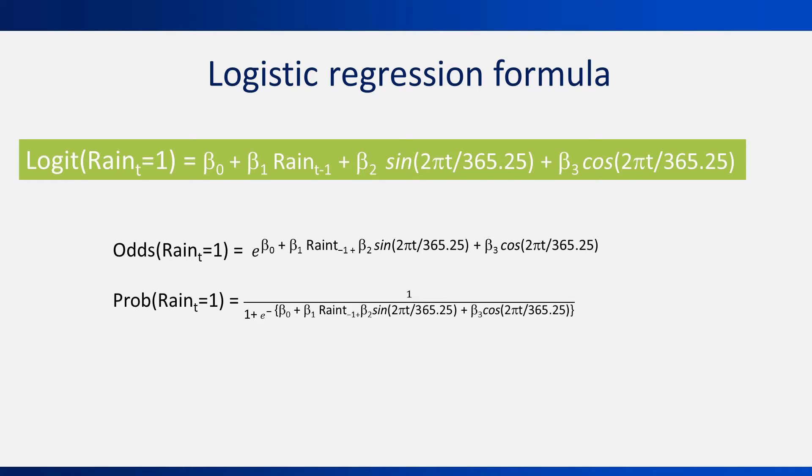The odds equation highlights the fact that what logistic does is in fact model a multiplicative relationship between the predictors and the odds of rain. The probability equation shows the relationship between the probability of rain and the predictors. It's a very complicated non-linear function. The only reason I'm showing you this equation is so that you remember that to generate a probability forecast requires converting the logit value using this formula. We will later see an example using this formula.